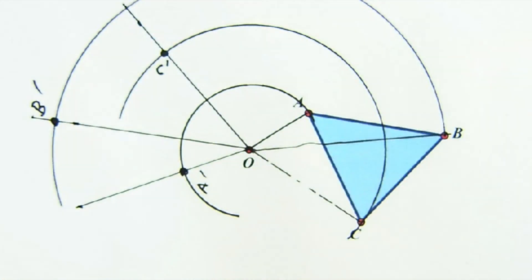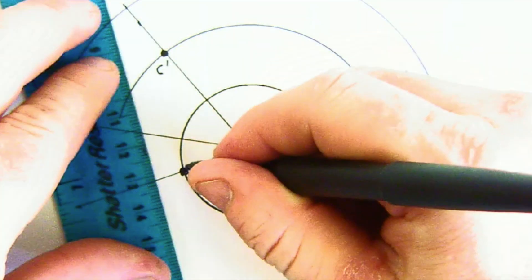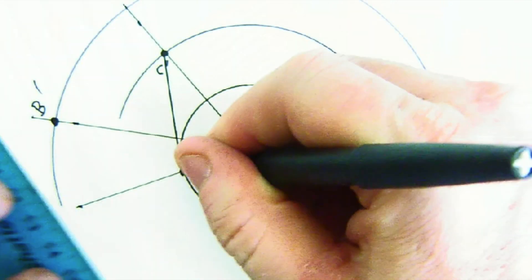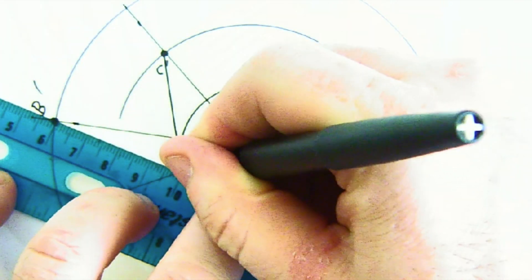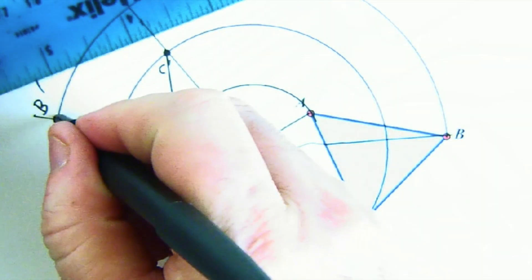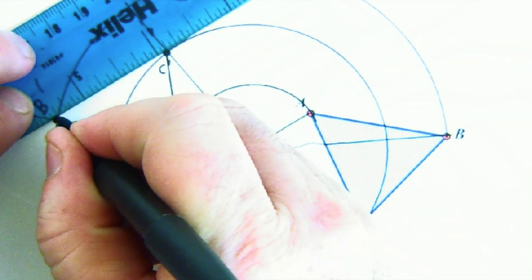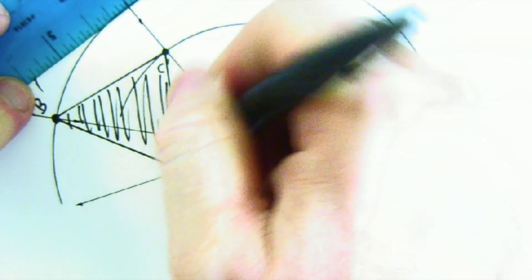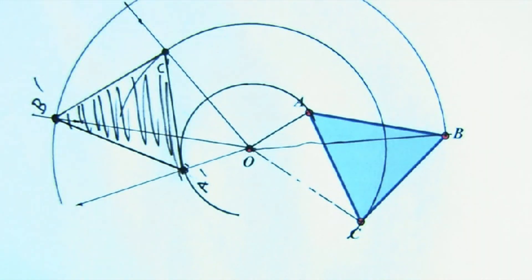Now in theory, I should be able to connect the three images and I should get an identical copy of my triangle. Oh, I just had a good idea how to test this. So there it is. I don't know, what do you think? Does it look pretty good? I'll show you how to test it.